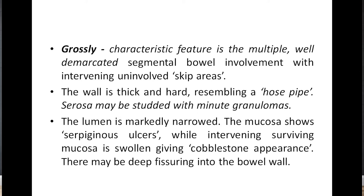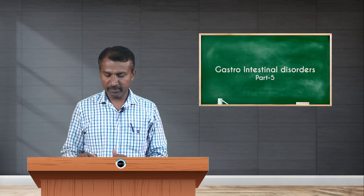In skip areas, one area has IBD while the adjacent area is normal. The wall is thick and rigid, resembling a hosepipe. The serosa may be studded with minute granulomas. The lumen is markedly narrowed, and the mucosa shows serpentinous ulcers with intervening surviving mucosa that is swollen, giving a cobblestone appearance. There may be deep fissuring into the bowel wall.